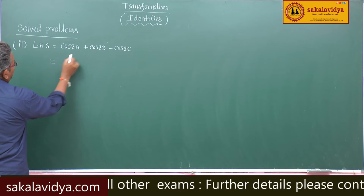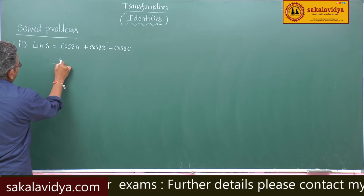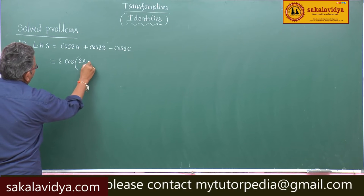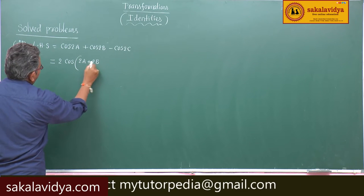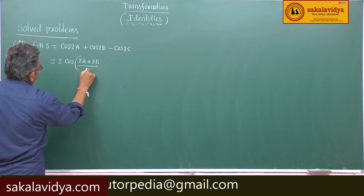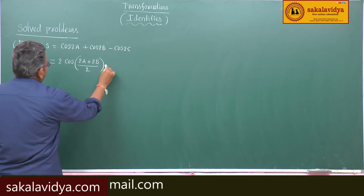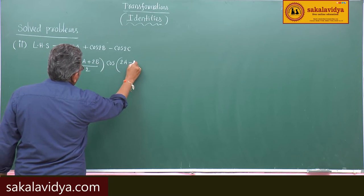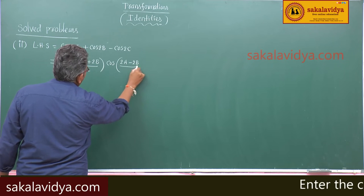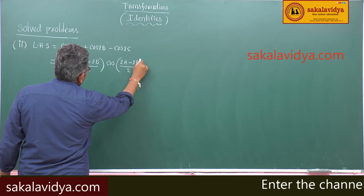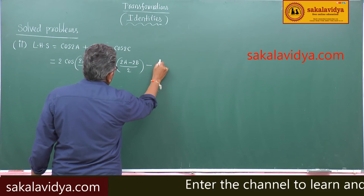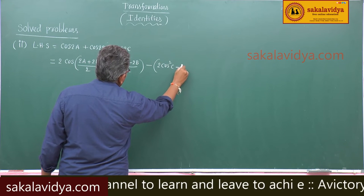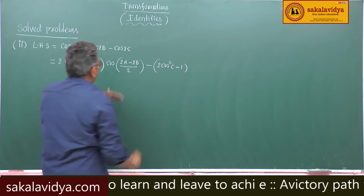cos2A plus cos2B equals 2cos((2A+2B)/2) · cos((2A−2B)/2), and minus cos2C can be written as 2cos²C minus 1.